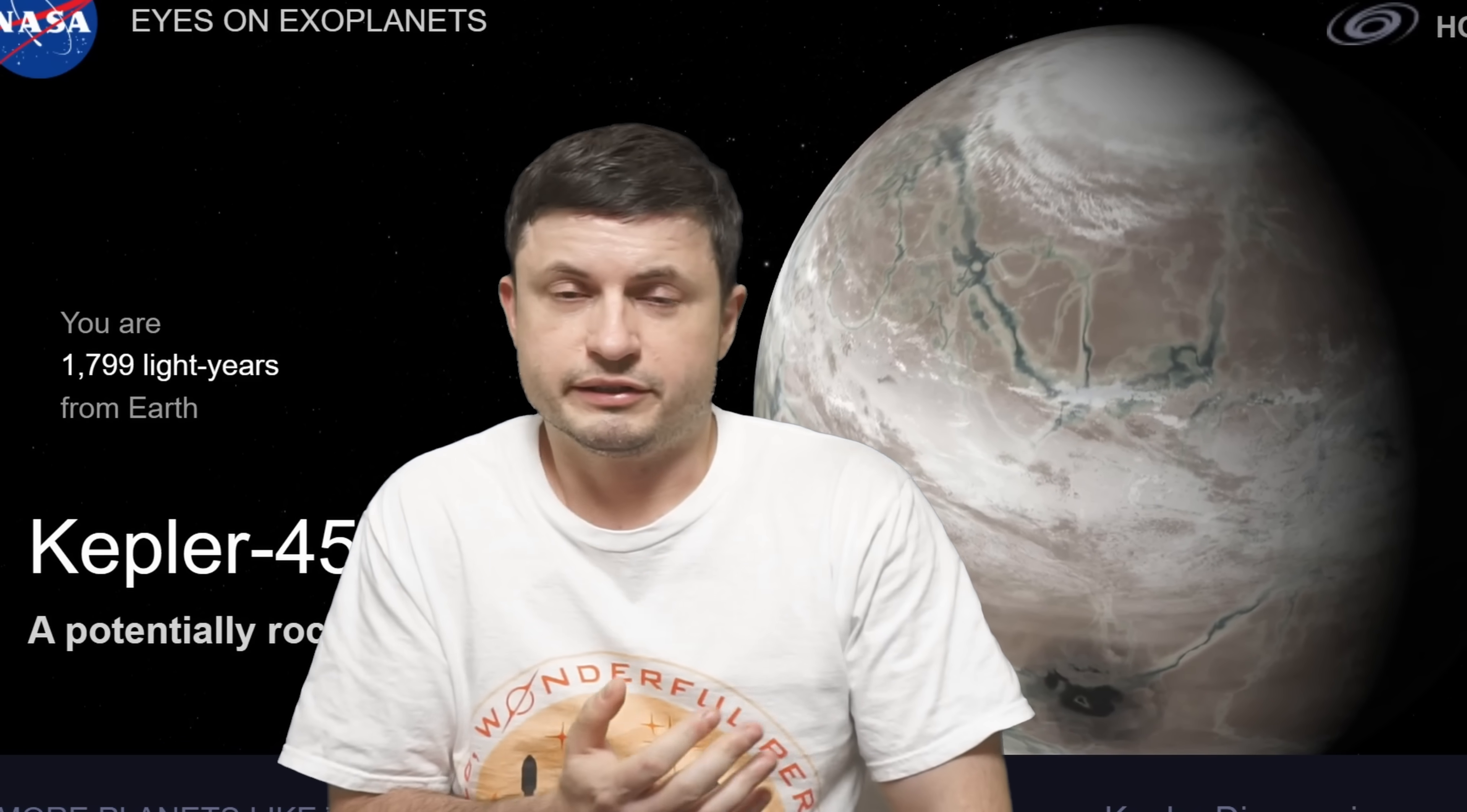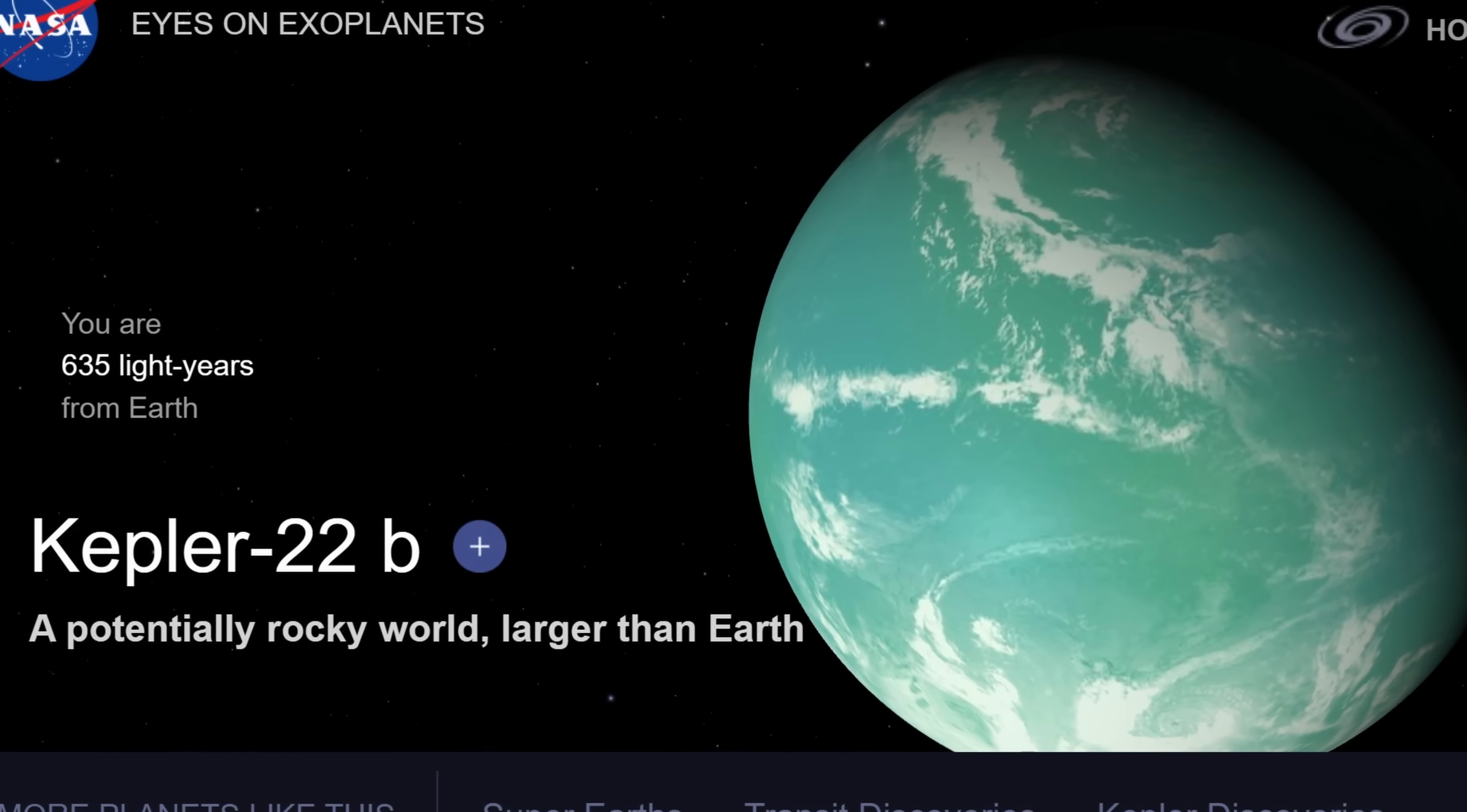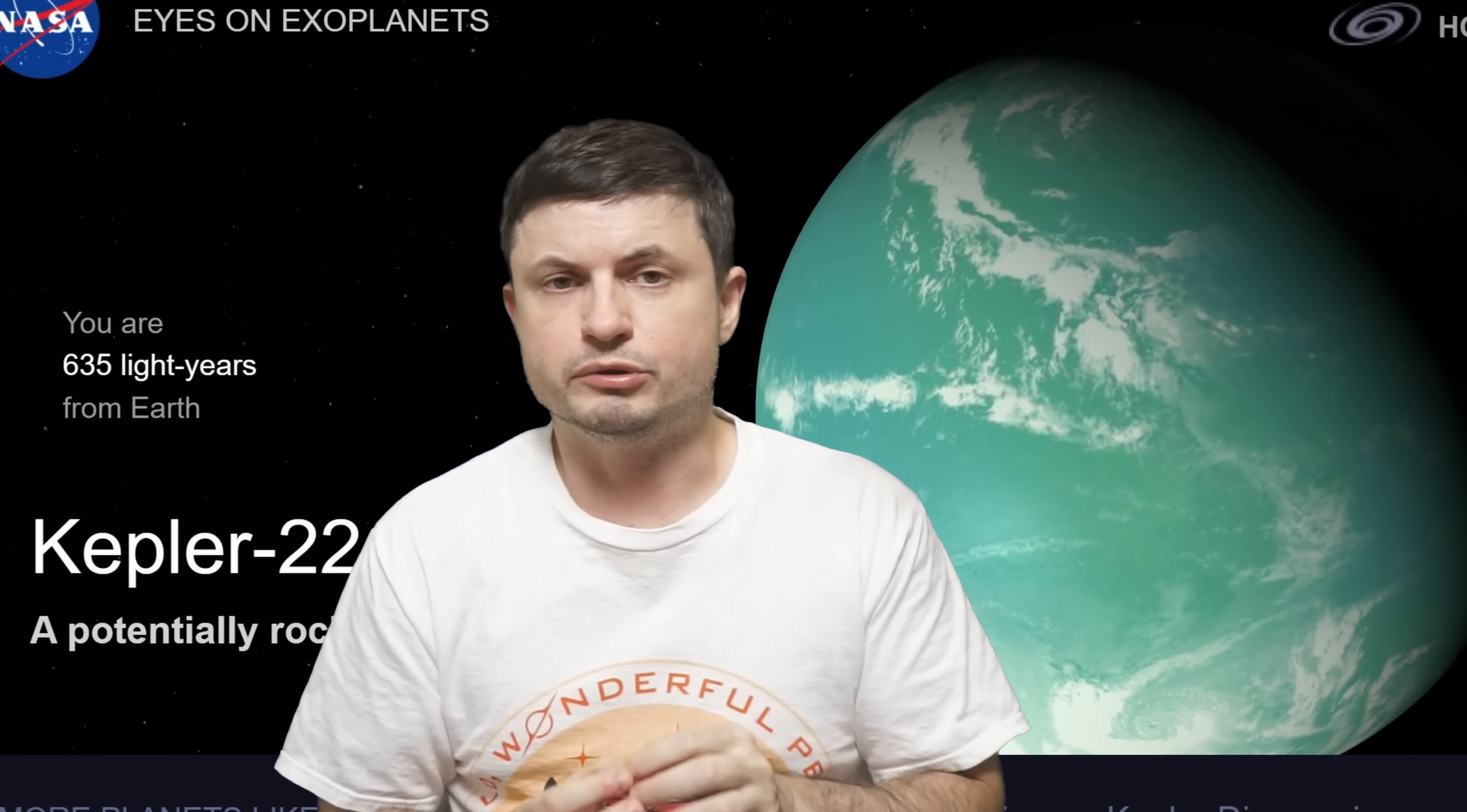But same problem as before, just way too far to discover anything else, and we have Kepler-22b at 635 light years. So basically just three exoplanets around G-type stars in potentially habitable zones.